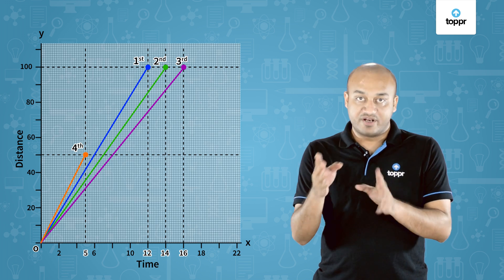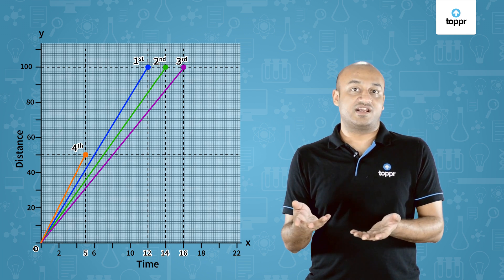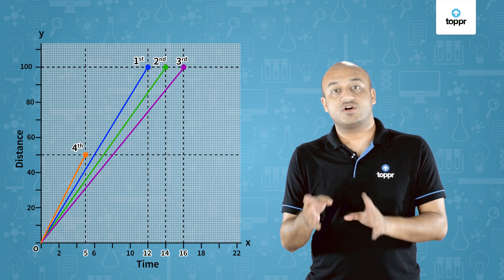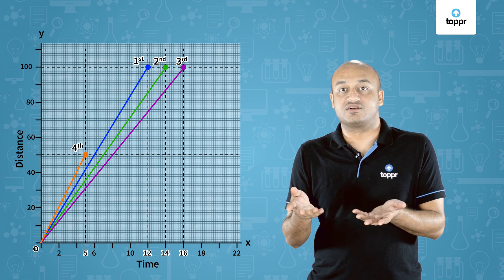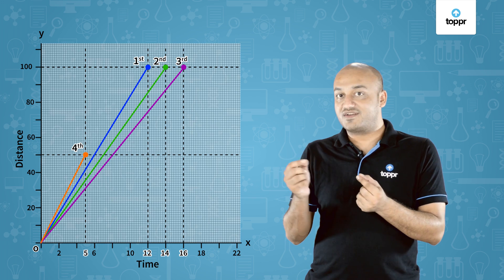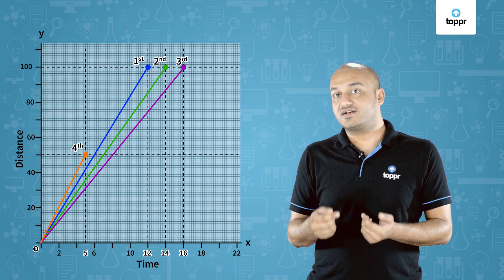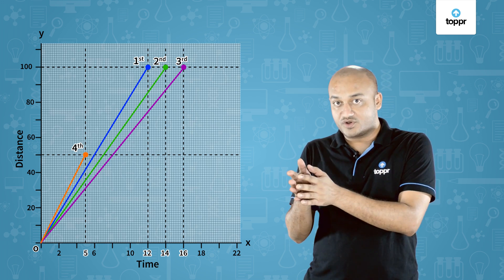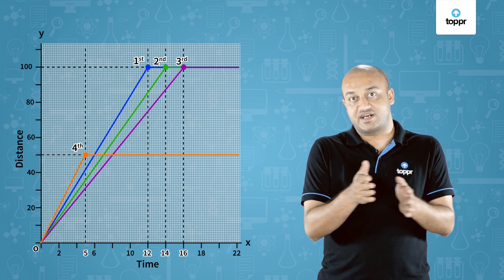Now an important point: we are assuming that at the end of the race, all four runners just stopped running. What that means is that their position does not change — the distance neither increases nor decreases along the time. So therefore, what you see after those points are just straight horizontal lines.